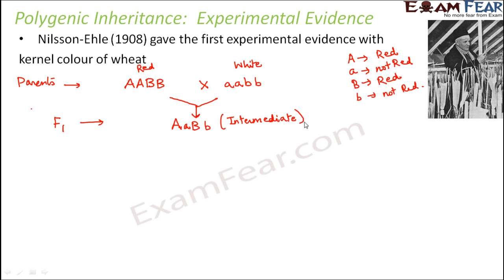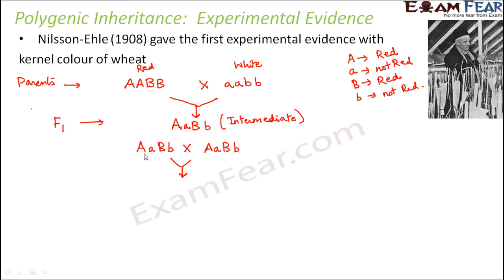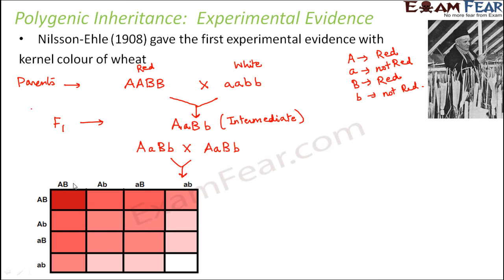In the next step, these intermediates were self-bred. So these kernels, which were slightly in between red and white in color, were self-bred — that is AaBb crossed with AaBb. What are the possible gametes that can form from each of these organisms? From AaBb you can have four types of gametes: capital A capital B, capital A small b, small a capital B, and small a small b. And the same is true for the other parent as well.